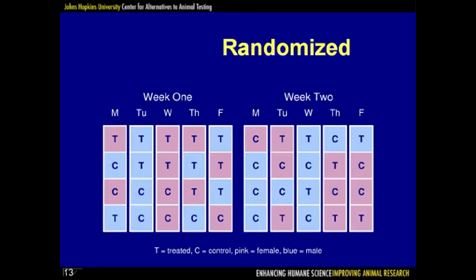An improved design assigns individuals to treatment groups and days completely at random. However, looking closely, we can see some days with only male mice and some with only female mice. Also, more of the treatment group mice are studied in week 1 and more controls in week 2. A disadvantage of this design is that we leave it completely up to chance how many individuals on a particular day are treated versus not, and how many male mice are treated versus not.